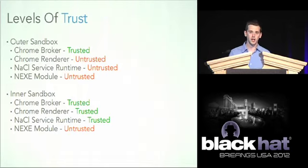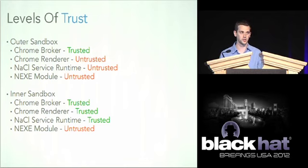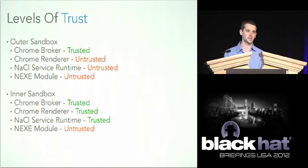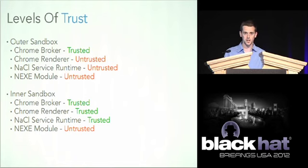Levels of trust are really important depending on context. When talking from the outer sandbox perspective, the Chrome broker is the only trusted component — the Chrome renderer process, the NaCl service runtime, and NaCl modules are all untrusted. When talking in the context of the inner sandbox, the Chrome broker is still trusted, but now the Chrome renderer process and the NaCl service runtime are also considered trusted, while NaCl modules remain untrusted. If you move from an untrusted NaCl module into the Chrome renderer process, you've completed a privilege escalation — you've left the inner sandbox and entered the outer sandbox.